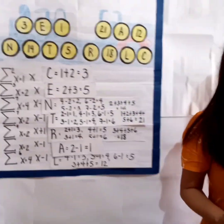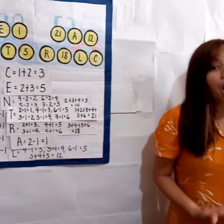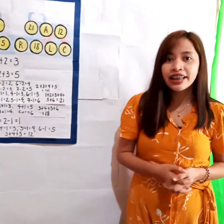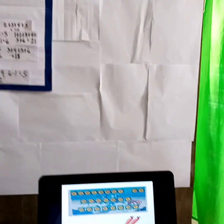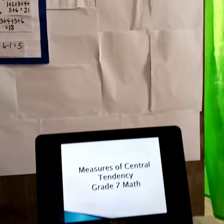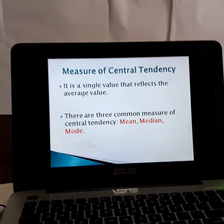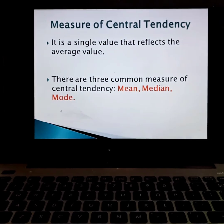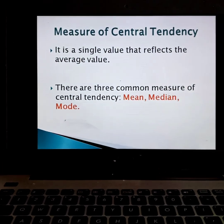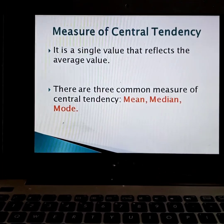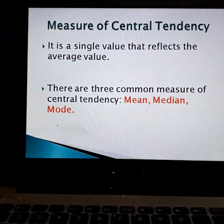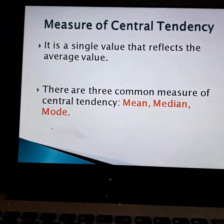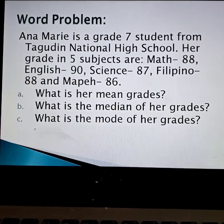So, our topic for today is about measures of central tendency in grade 7. The meaning of measure of central tendency — it is a single value that reflects the average value. There are three common measures of central tendency: the mean, median, and mode.